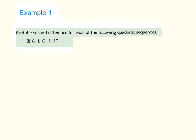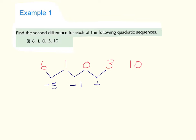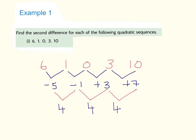Here's another example: the sequence 6, 1, 0, 3, 10. They've told us it's quadratic, so let's find the first differences: 6 to 1 is minus 5, 1 to 0 is minus 1, 0 to 3 is plus 3, and 3 to 10 is plus 7. None of those are the same, which confirms it's not linear. Now the second differences: between minus 5 and minus 1 is plus 4, between minus 1 and plus 3 is plus 4, and between 3 and 7 is also plus 4.